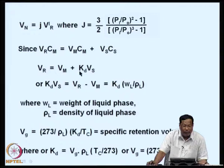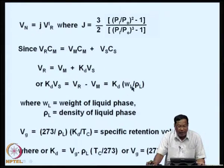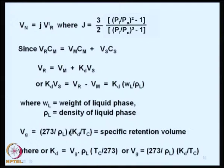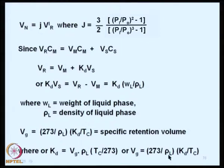The net retention gives Kd × Vs = Vr - Vm = Kd × Wl/ρl, where Wl is the weight of the liquid phase and ρl is the density of the liquid phase. The specific retention volume Vg is given by 273ρl × Kd/Tc, allowing calculation of retention volume based on density and partition coefficient as related to column temperature Tc.